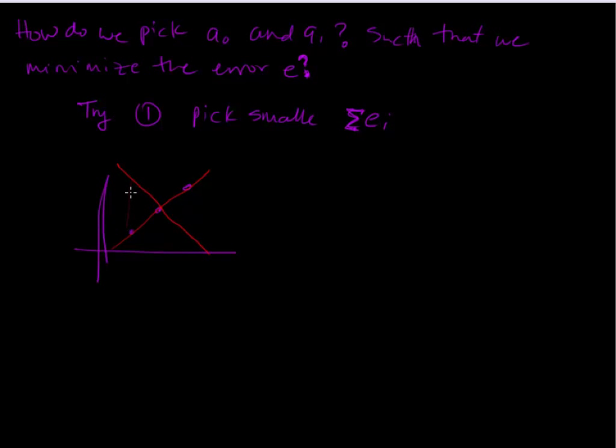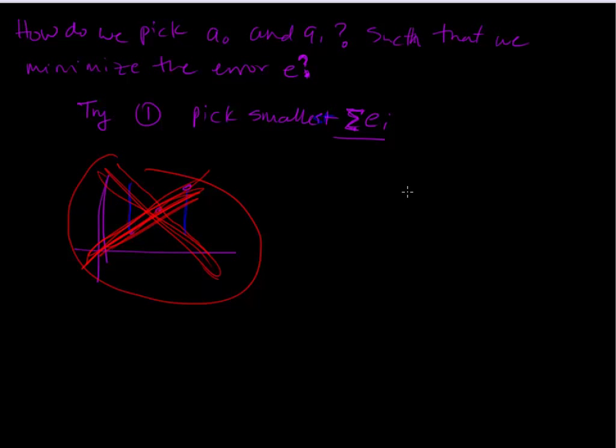Where this would be, say, negative error here. And, or a negative error over here and a positive error over here and a negative error over here. It's possible that we could actually get in a situation where these would cancel them out. So if we just try to pick the smallest, sorry, this should say smallest sum of errors, it's possible that we won't get a unique solution. So, this is not what we want to do. We'll go ahead and make this not the right thing that we want to do.